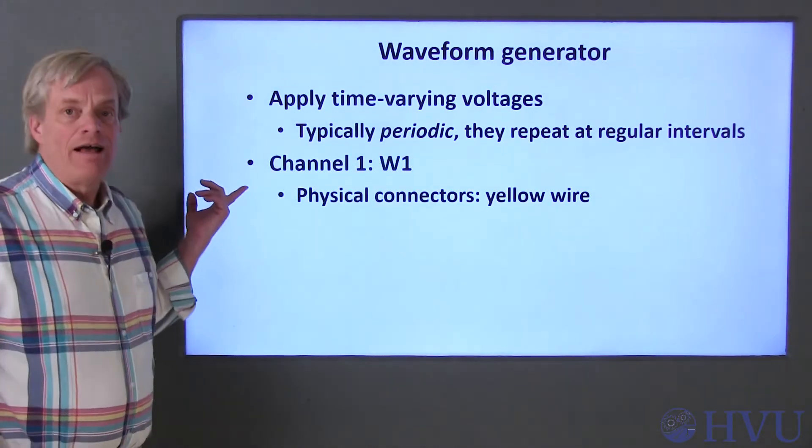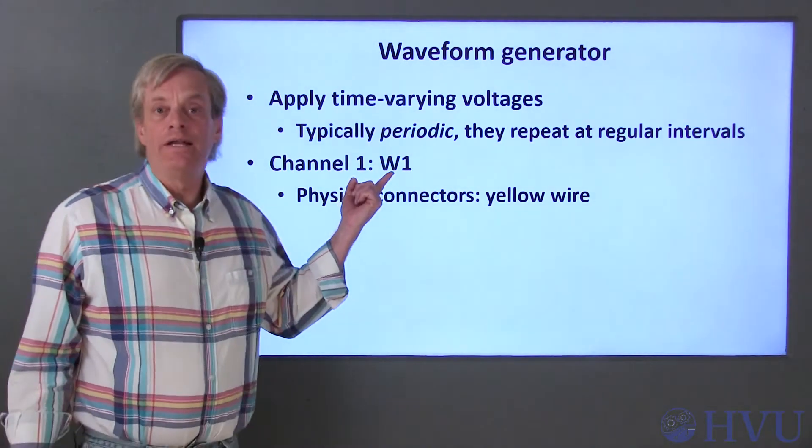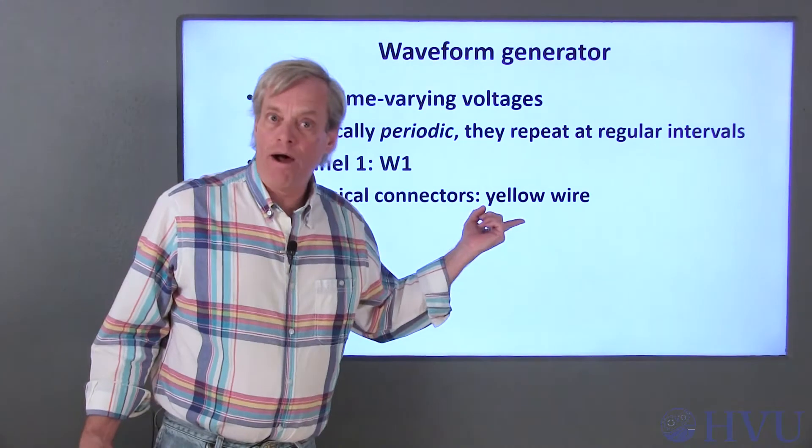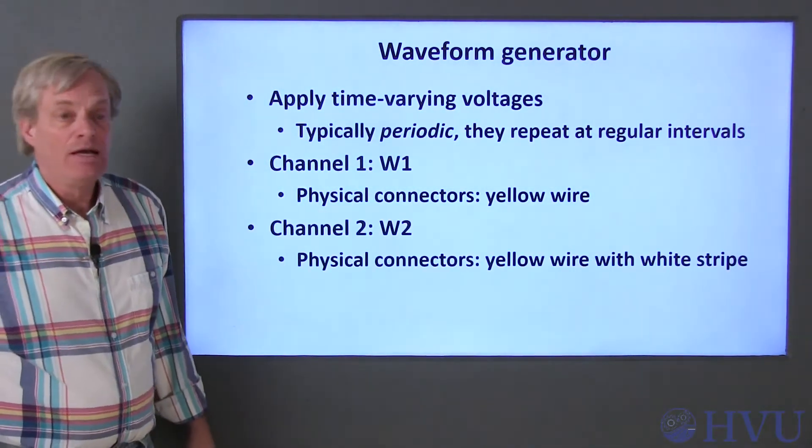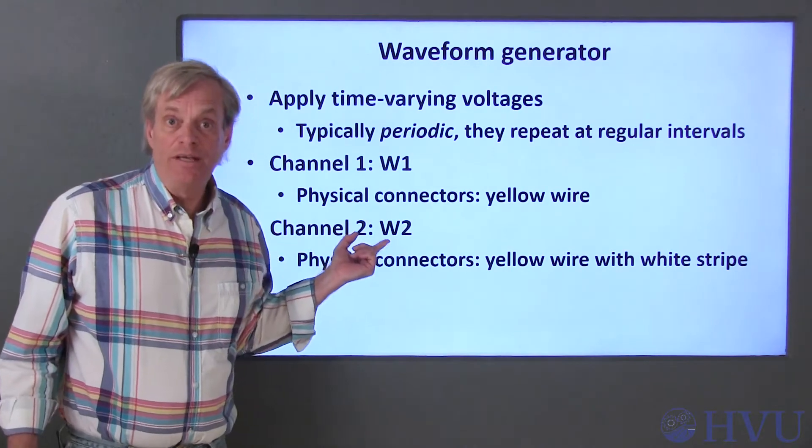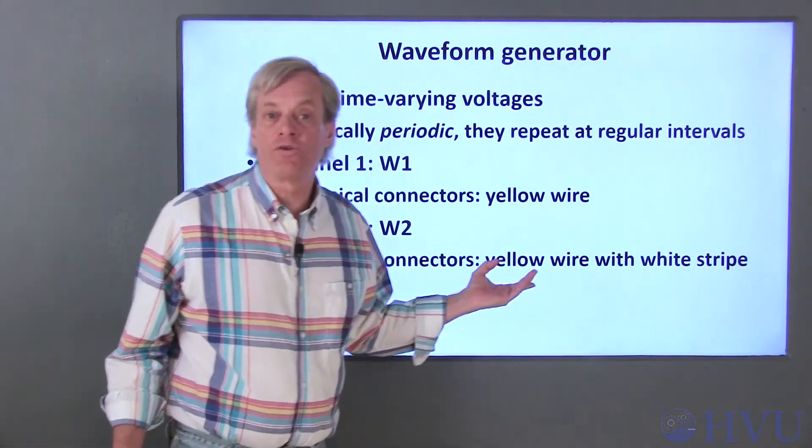The waveform generator has two channels. Channel 1 is accessed via the W1 terminal. Its physical connector is the yellow wire on the flywire connector. Channel 2 is accessed via the W2 terminal. Its physical connector is the yellow wire with a white stripe.